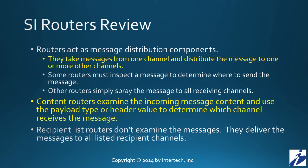Content routers, for example, look at the inbound message and determine — either based on the payload or header value — which of the outbound channels should receive the message. Whereas recipient list routers don't look at the messages, either their payload or header value. Instead, they simply deliver the message from the inbound channel to all of the outbound channels which are part of a recipient list.